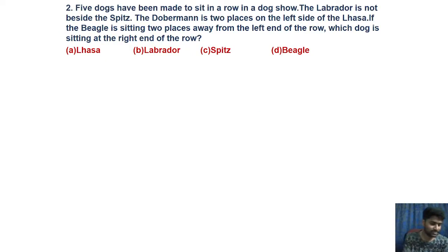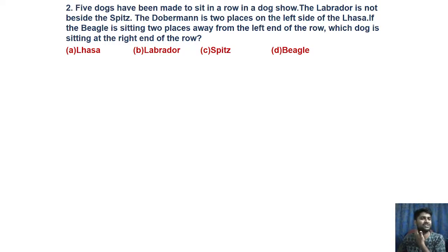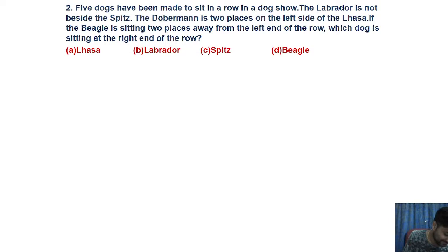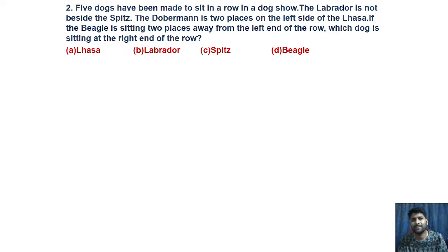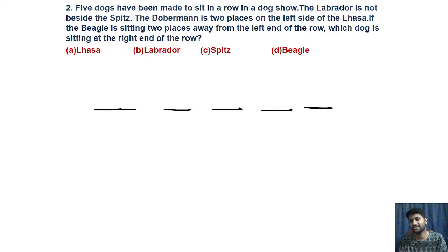Now question number two is also related to arrangement. In the Accenture paper they are majorly focused on arrangement questions — these are important and they are also repeated. Here the question says five dogs have been made to sit in a row in a dog show. So there are five dogs we have to place.